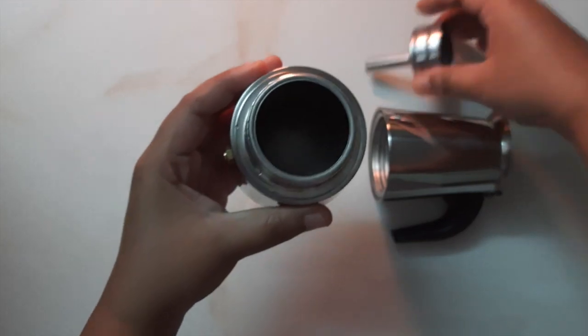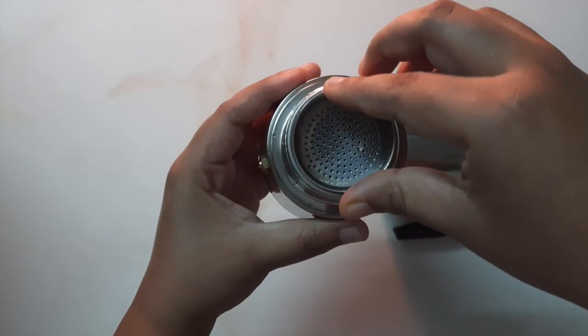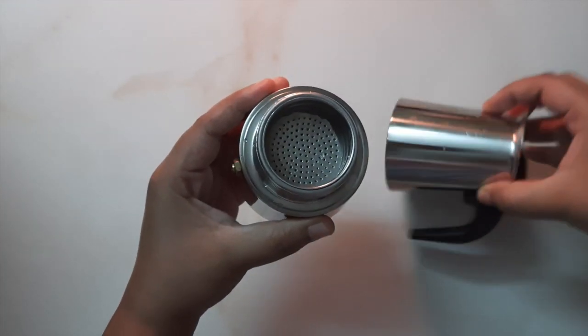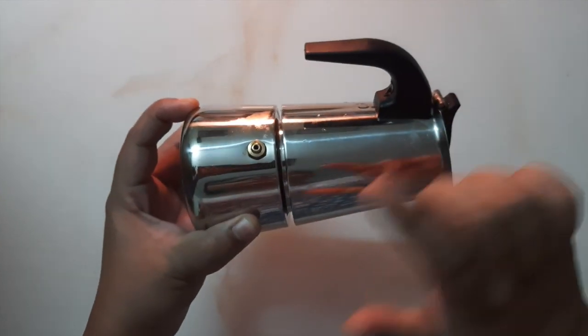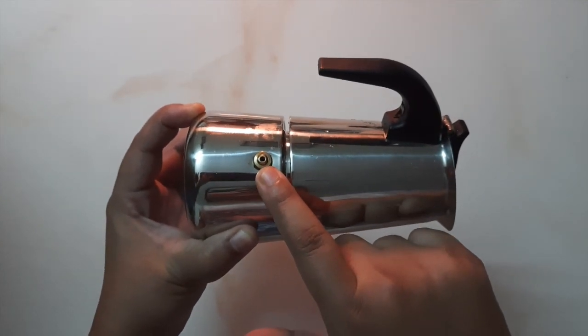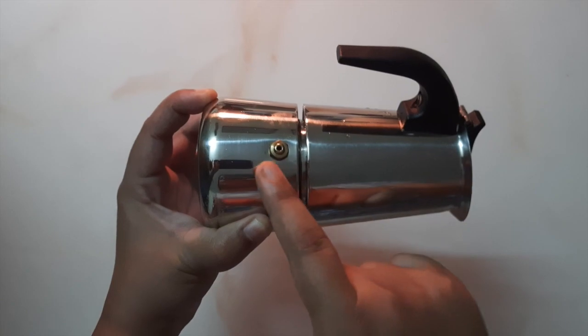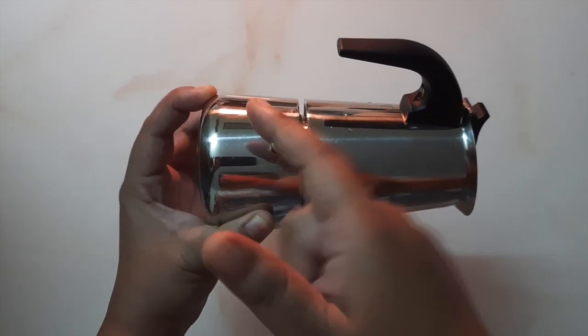After filling the water, we put the coffee over here, close it, and then put it on the gas stove. A very important part I want to show you is this valve, this golden valve. We have to make sure not to fill the water above this - only fill the water until here in the pot.